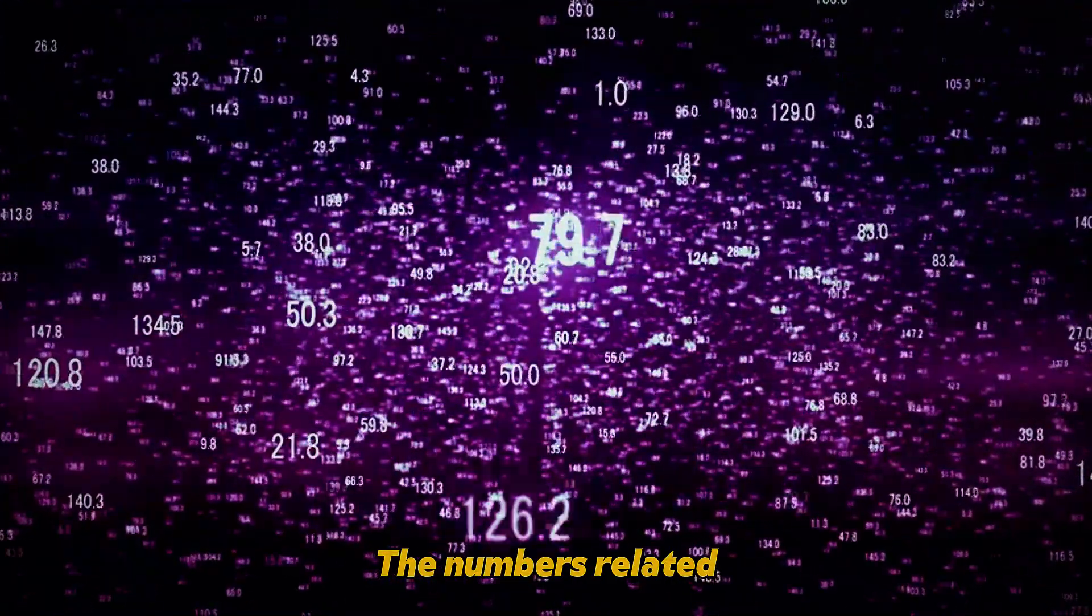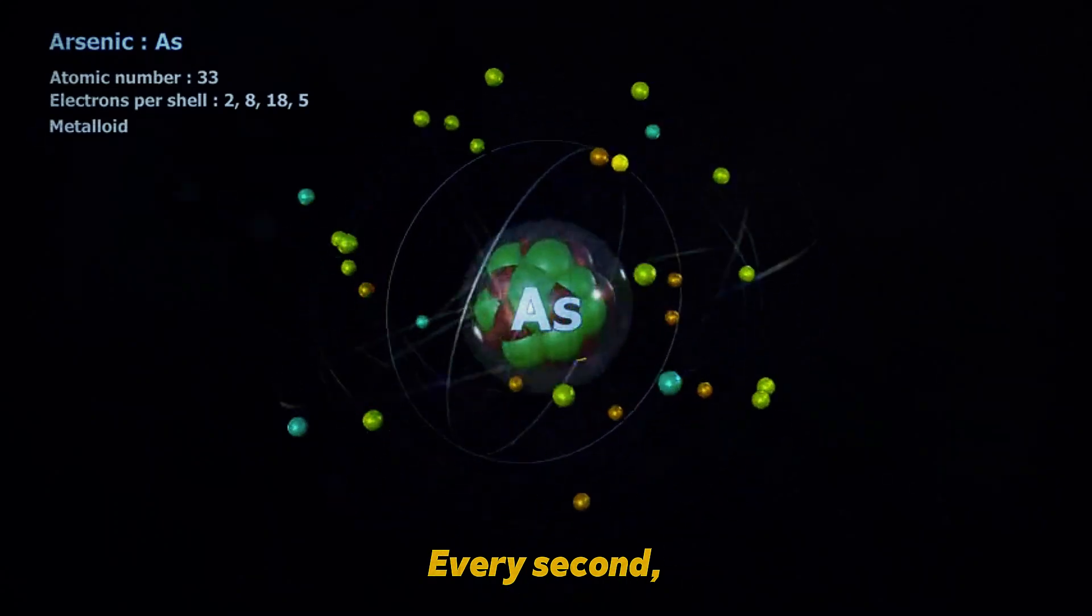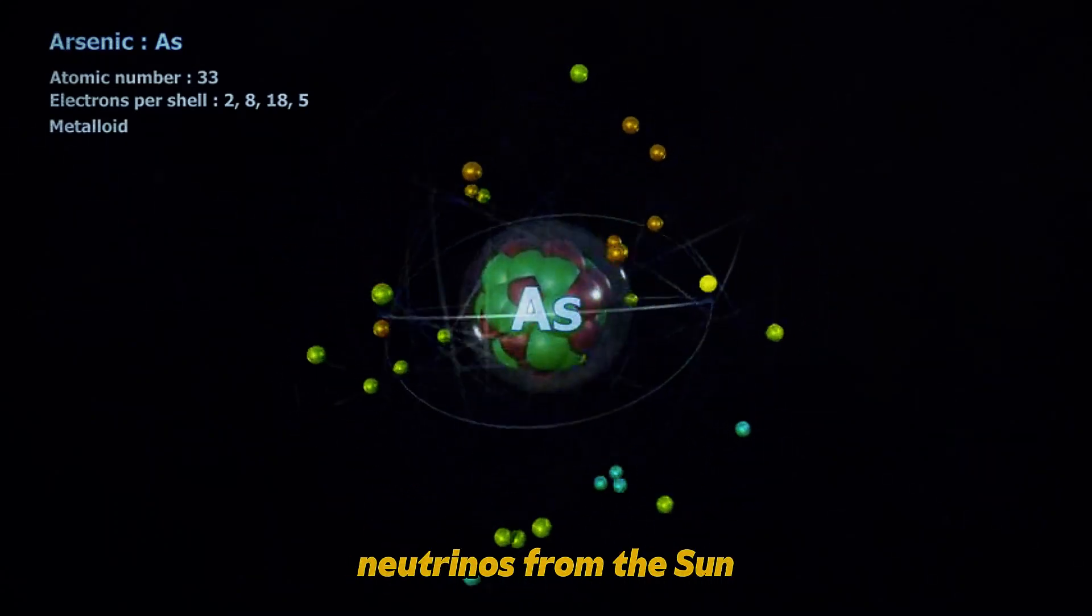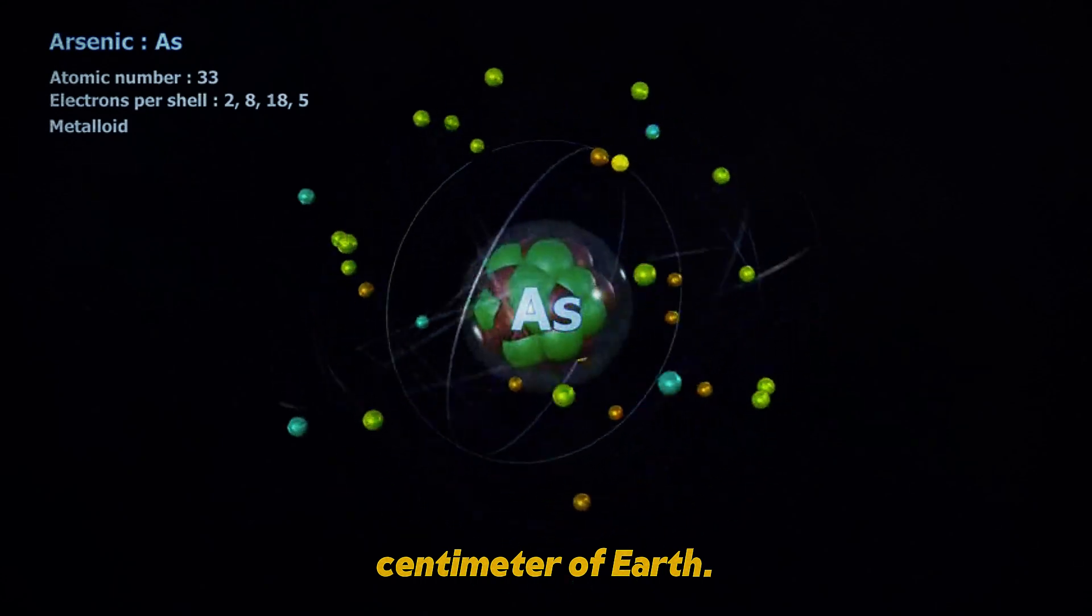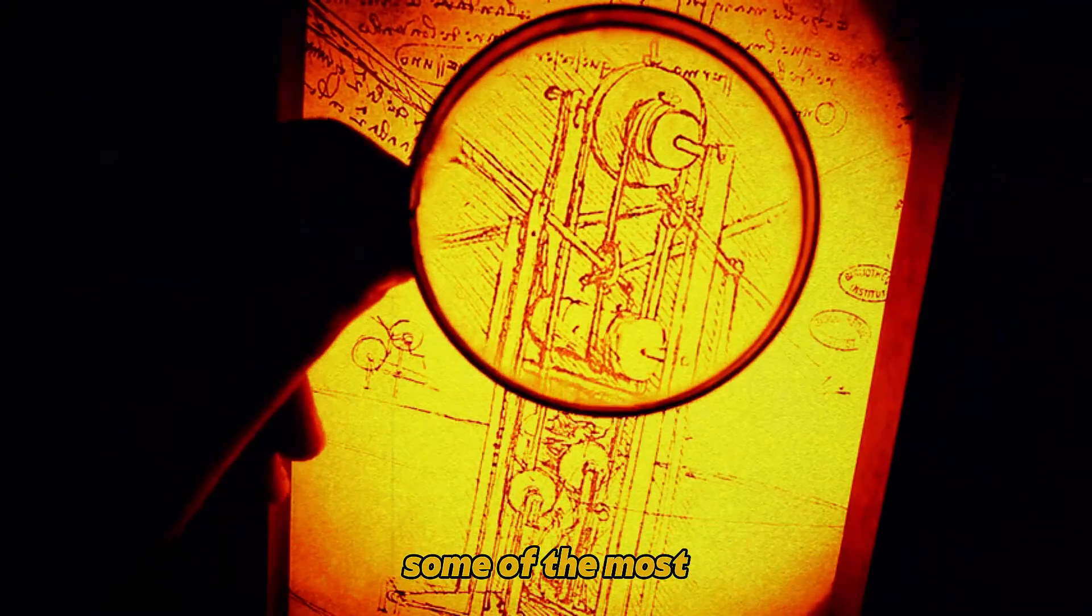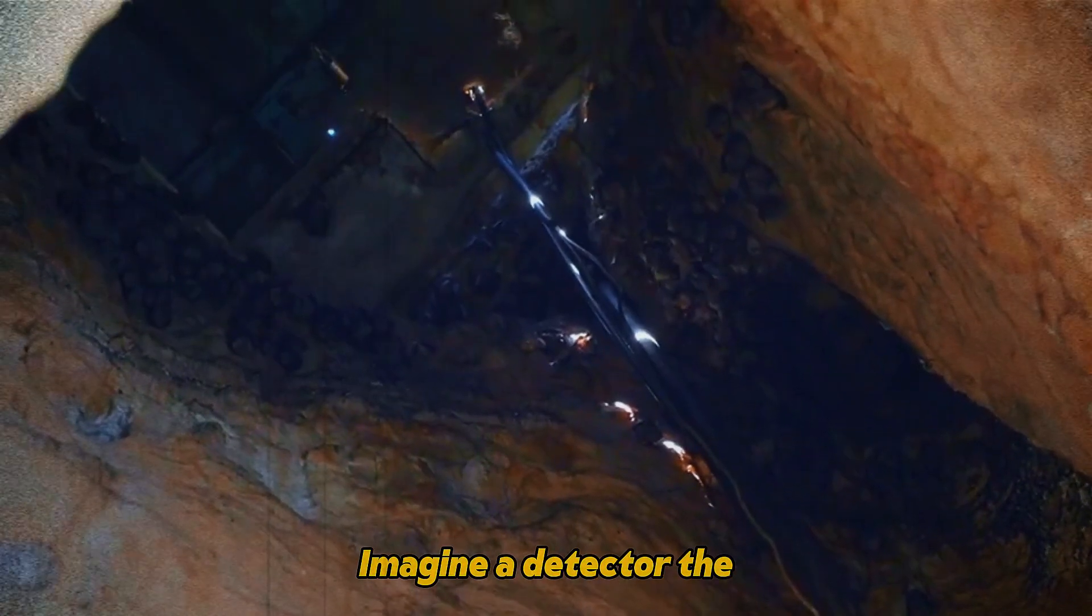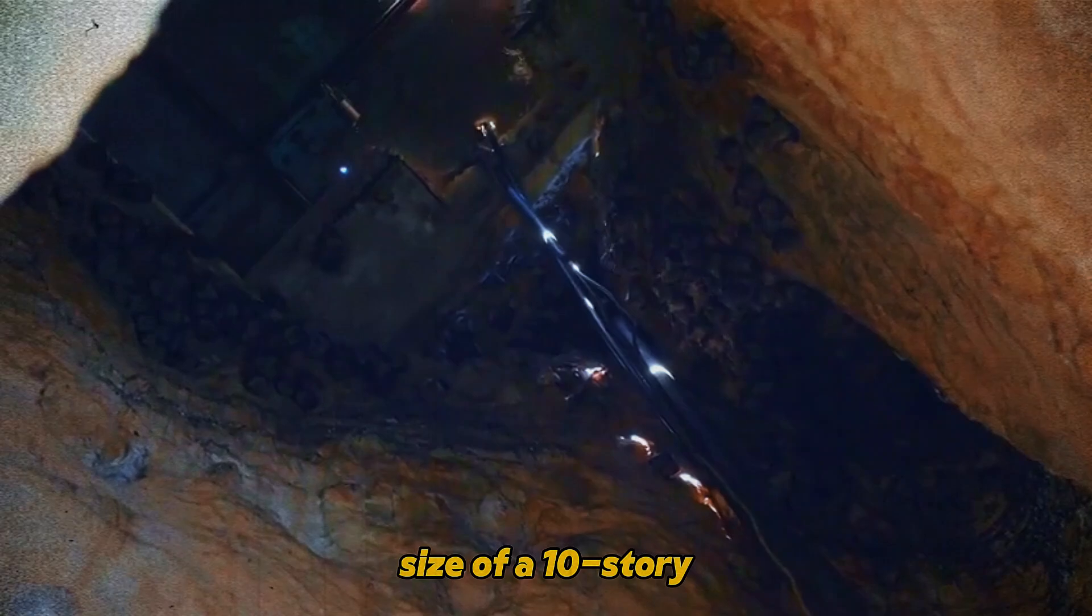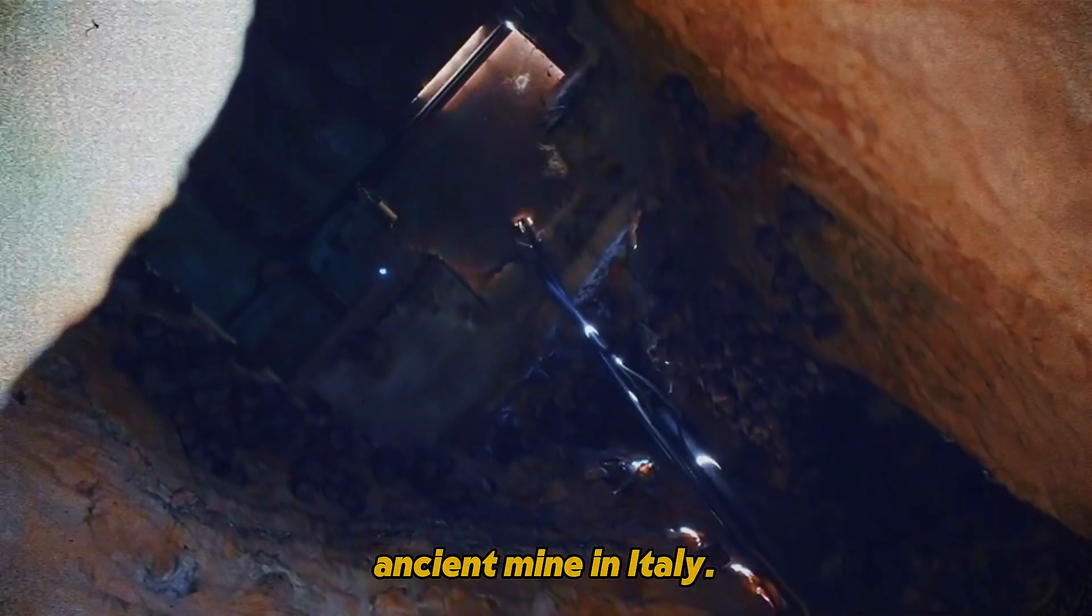The numbers related to neutrinos are simply astounding. Every second, approximately 65 billion neutrinos from the sun pass through each square centimeter of Earth. To try to detect them, scientists have built some of the most extraordinary instruments ever created by humanity. Imagine a detector the size of a 10-story building, buried 2.4 kilometers deep at an ancient mine in Italy.